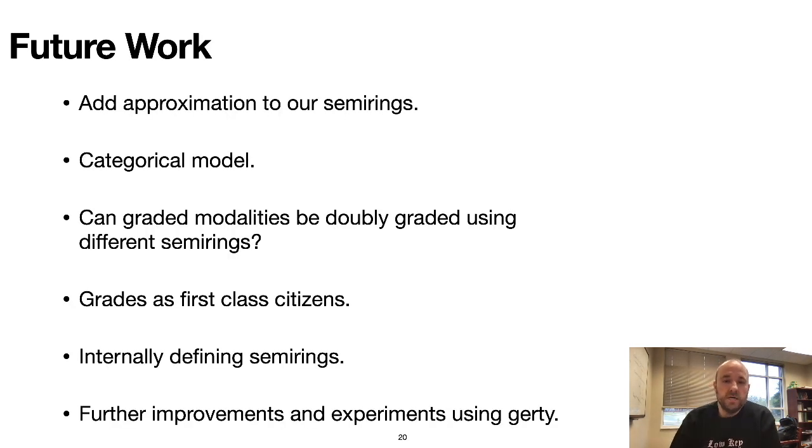There's still lots of work to be done. For example, we would like to add approximation to the system by adding a preorder to the semi-ring. This allows for more kinds of usage analysis, like non-exact usage and usage intervals. We are working on a categorical model for the system as well. Some interesting features for GRTT would be allowing the subject and the subject's type grades to be from different semi-rings and to be able to internalize both of these using the graded modality. Also, we would like to make grades first-class citizens and then allow for the definition of semi-rings within the system itself, which would make for an extremely expressive system. Finally, we plan to make a number of improvements and conduct a number of experiments to and in GRTT.